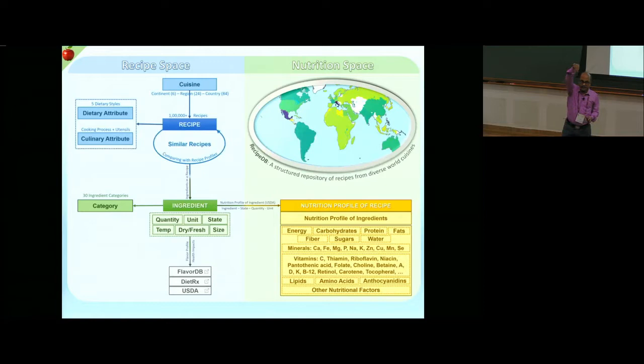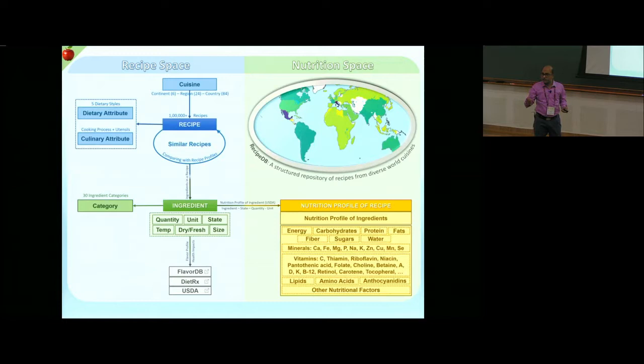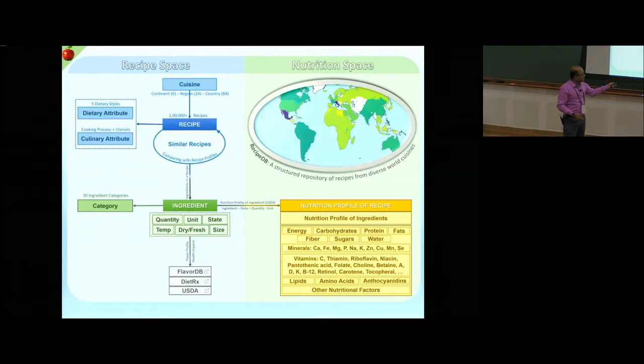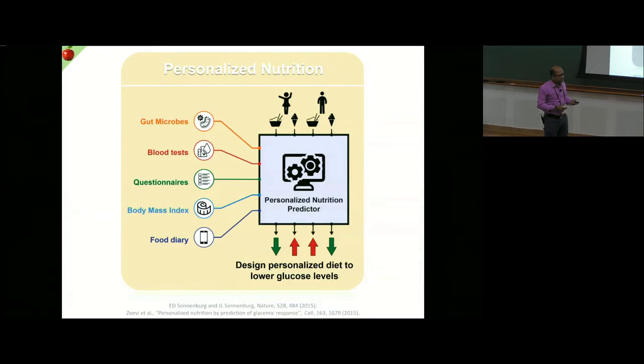RecipeDB captures rich attributes: quantity, unit, state, temperature, whether an ingredient is dry or fresh, chunk size, ingredient category, and dietary style—whether it is a keto or vegan recipe. All of this is connected to USDA nutritional data and our internal databases—FlavorDB, DietRx, and others—creating a huge repertoire where we can look for solutions to food-related health issues and diet-linked diseases.